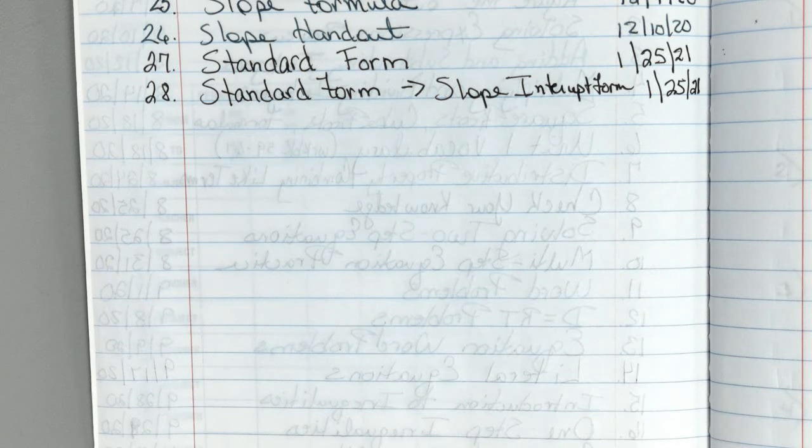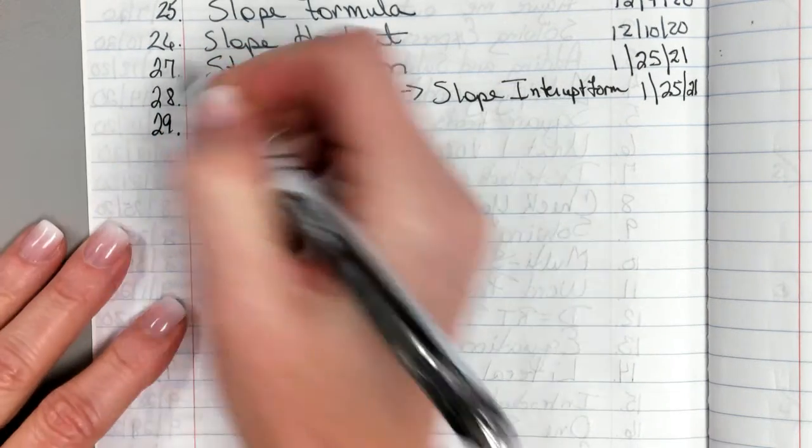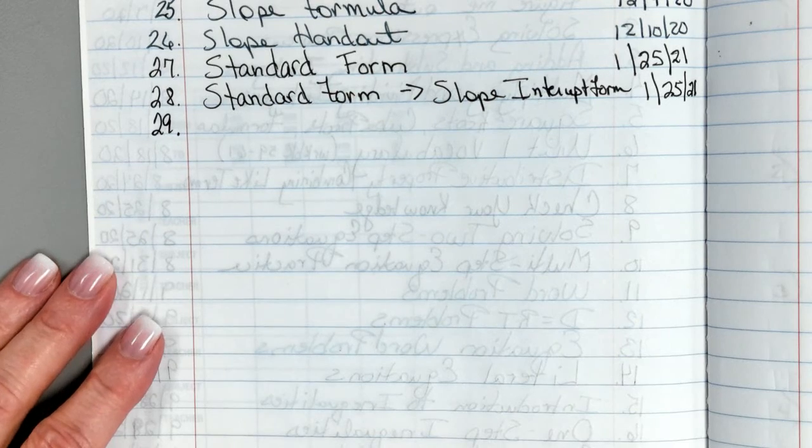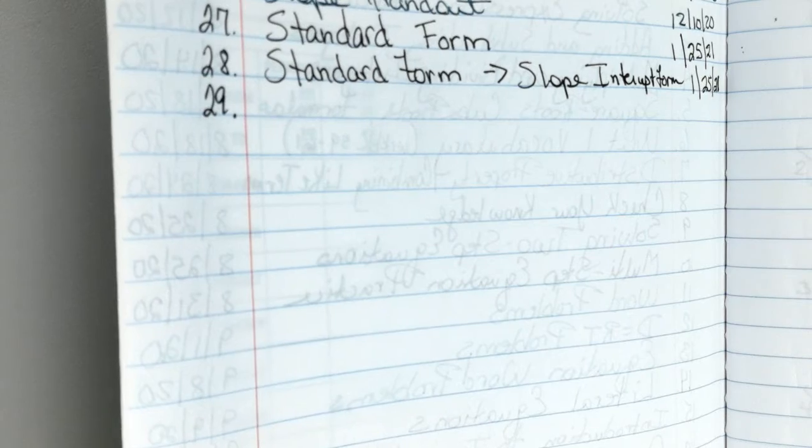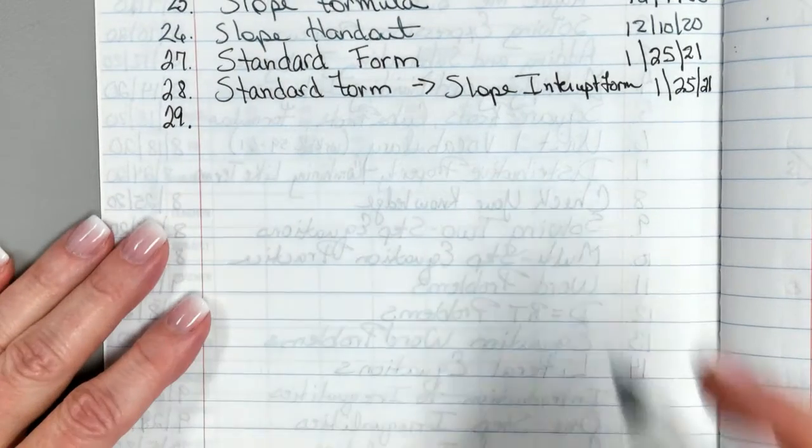All right, today we're going to do number 29, and I don't think we'll take that many notes in our journal, and then we'll switch over. We've got a couple of things in Delta Math to do, but we need to make sure we cover this topic.